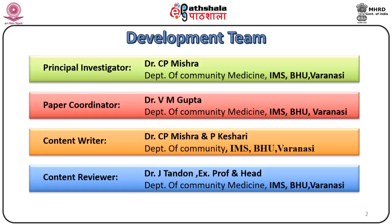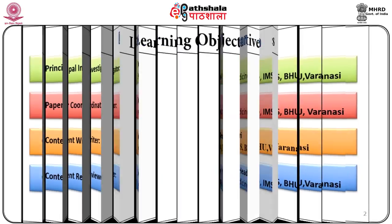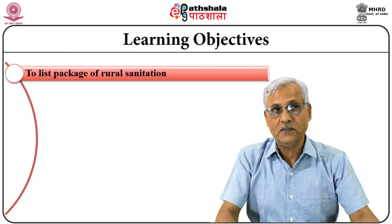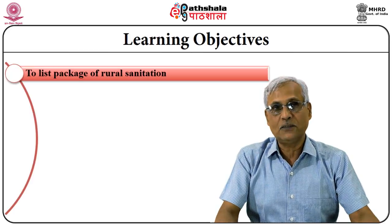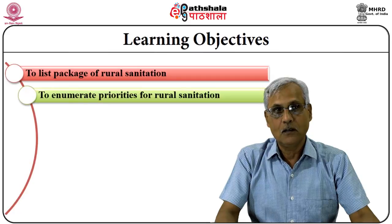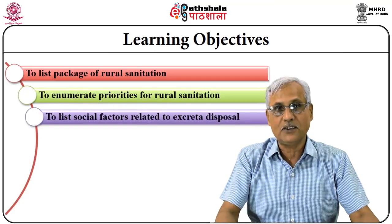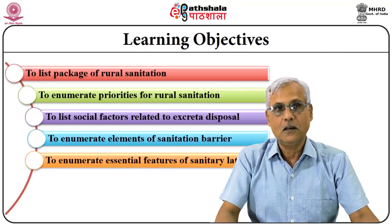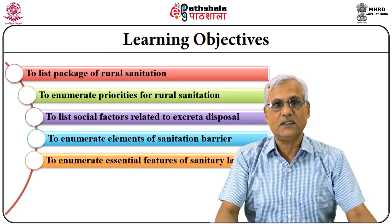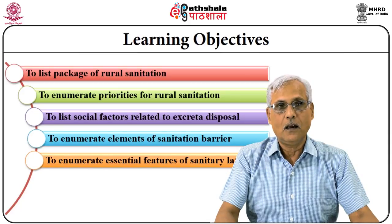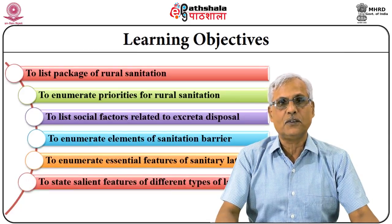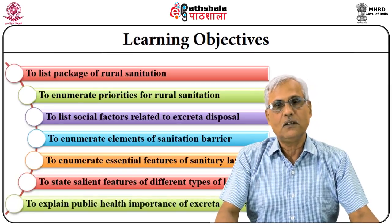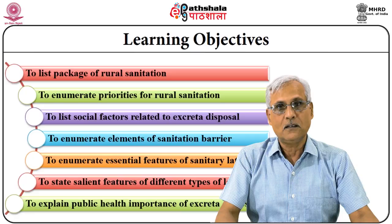For this module, a number of learning objectives have been set: to list packages of rural sanitation, to enumerate priorities for rural sanitation, to list social factors related to excreta disposal, to enumerate elements of sanitation barrier, to enumerate essential features of sanitary latrines, to state salient features of different types of latrines, and finally to explain publicly the importance of excreta disposal.